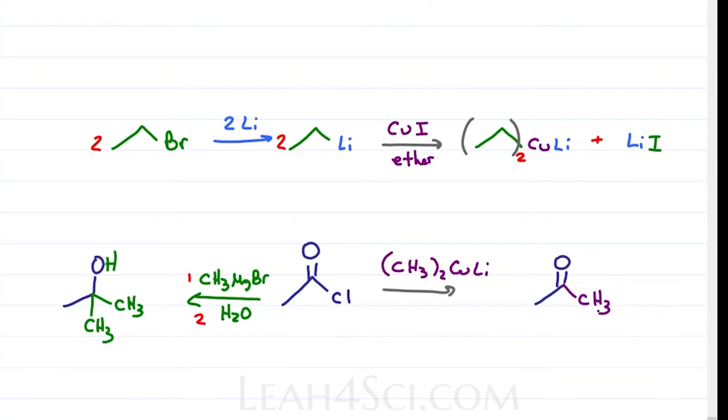Remember how Grignard attacks an acid halide twice? Because the Gilman reagent is less reactive, it'll only attack the acid halide once, stopping at the ketone.